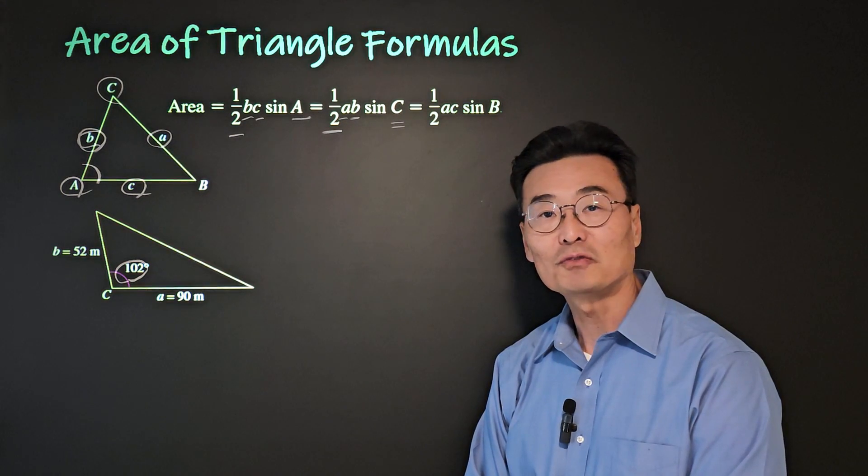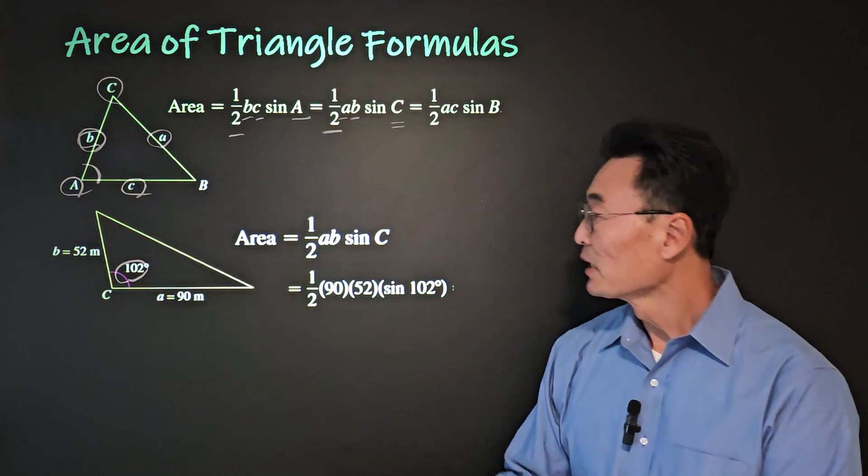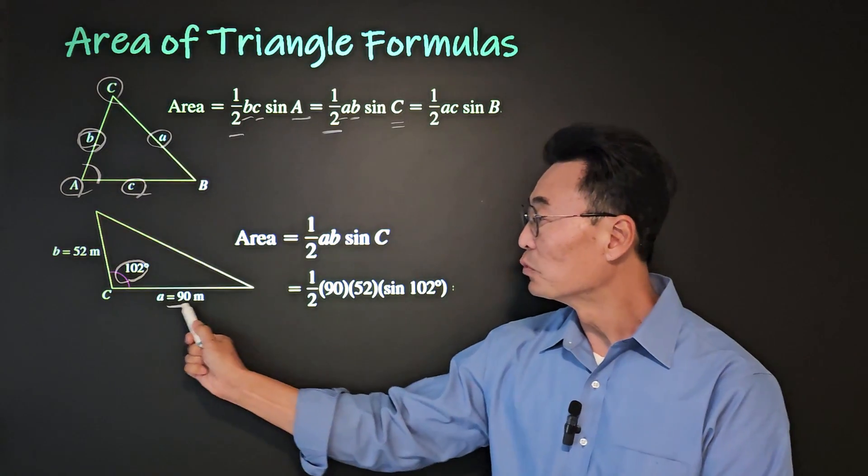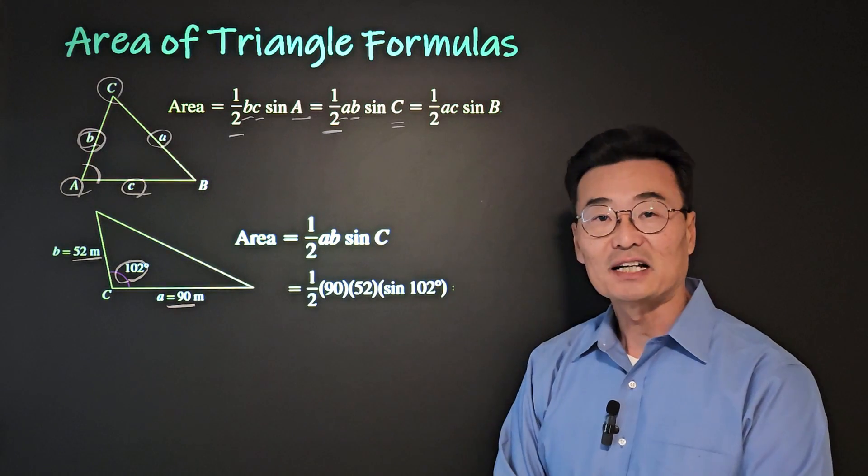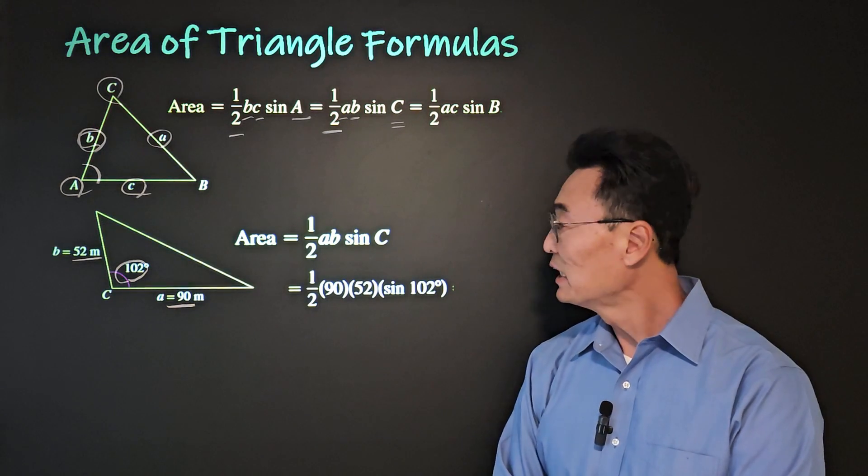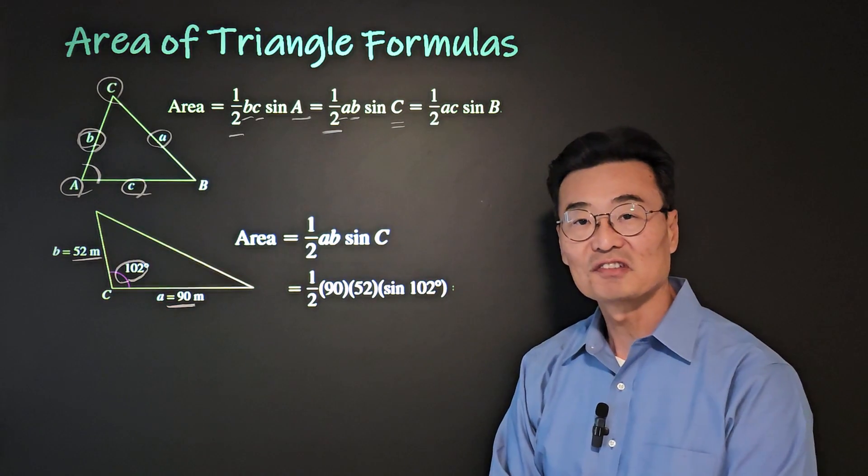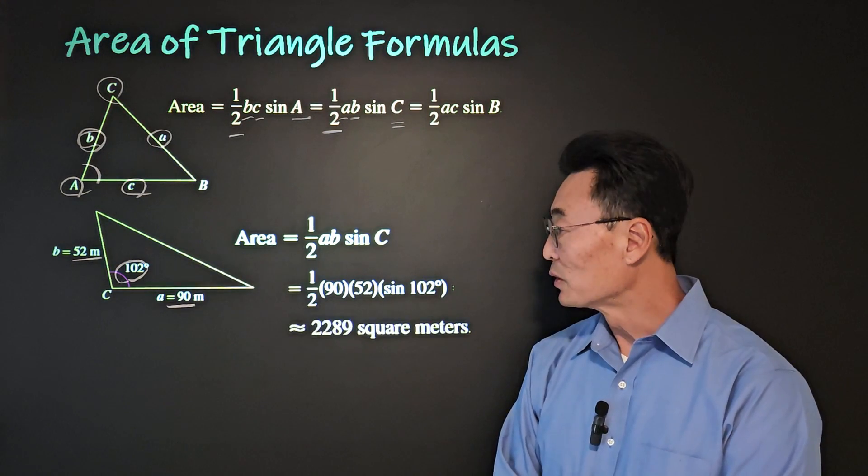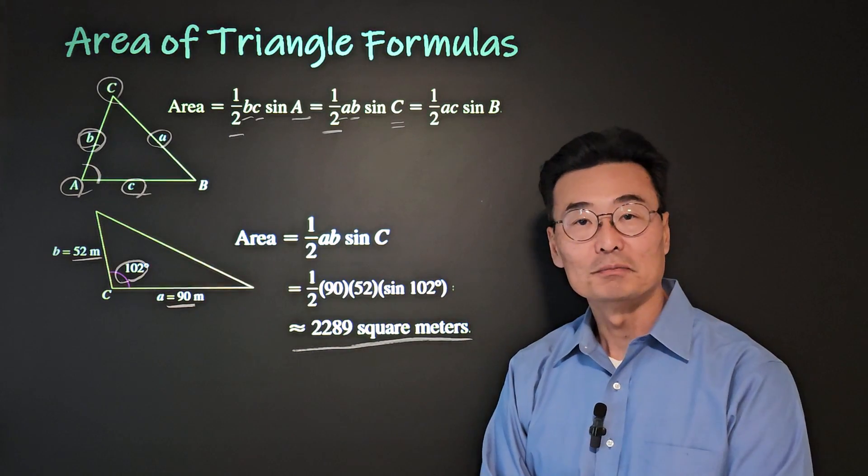So the area of the triangle using the formula will be one half a b sine of c, or one half of 90, which is side a, times 52, which is side b, and then finally times sine of 102, the angle between the two sides, where if you work this out, you'll get 2289 square meters.